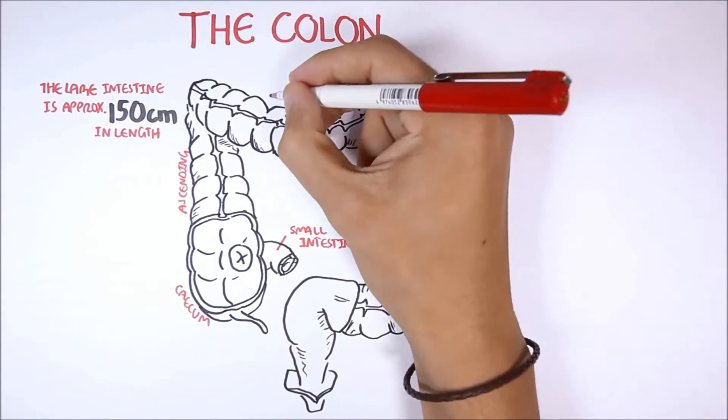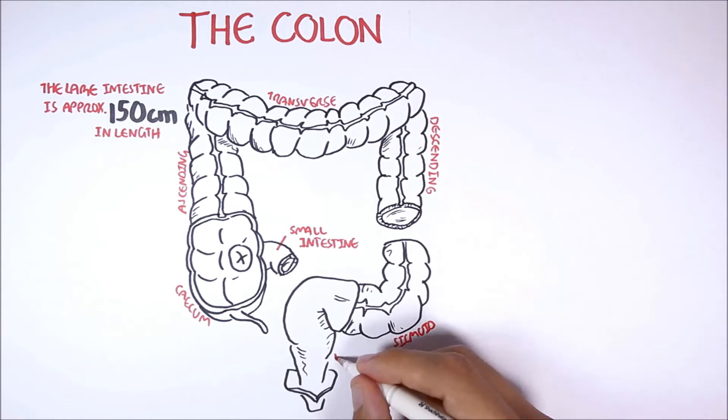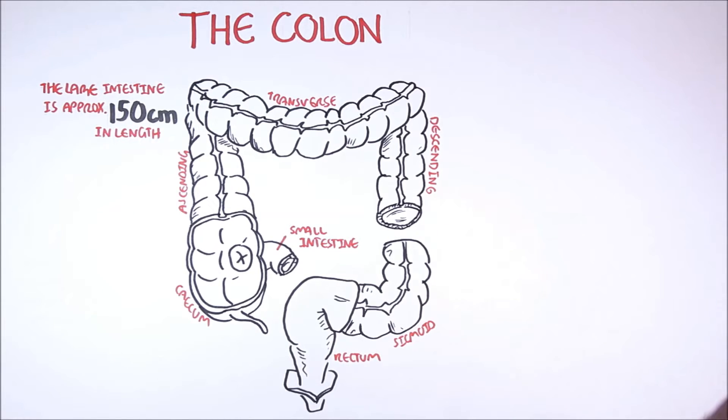Then there is the ascending colon, the transverse colon, descending colon, sigmoid colon, and finally the rectum. Waste is excreted through the rectum and anus.